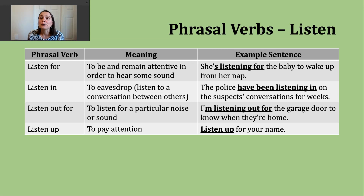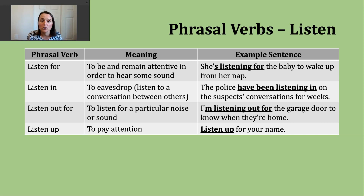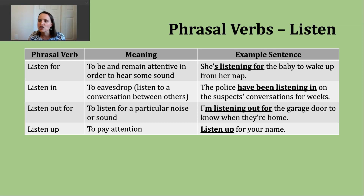A third phrasal verb is "to listen out for," meaning to listen for a particular noise or sound. For example: I'm listening out for the garage door to know when they're home — when I hear that sound, I know someone is coming in. The last phrasal verb is "listen up," which again means to pay attention, very close to that fourth definition. It's often used in the imperative: "Listen up for your name" — so perhaps names are being called at an event and people are encouraged to pay attention so they know when they're next.